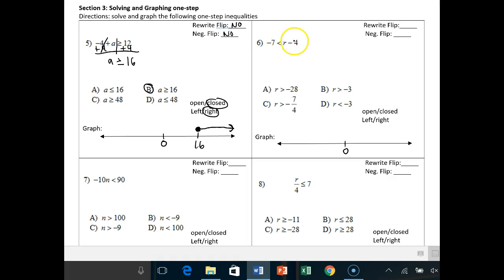Number 6, do I need a rewrite flip? Yes, I do. The variable is on the right-hand side of the inequality. I want to read it left to right, so the answer here is yes. Is my variable negative? The answer is no. So let's rewrite this as R plus negative 4 greater than negative 7. Notice the flip in my inequality sign.